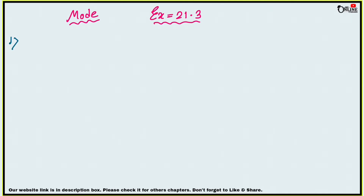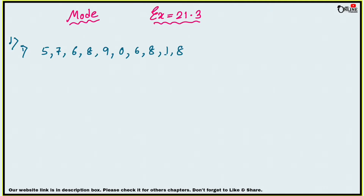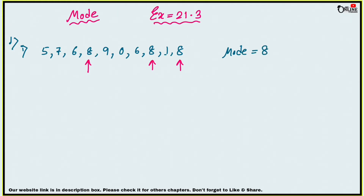The first set is: 7, 5, 7, 6, 8, 5, 7, 6, 8, 9, 0, 6, 8, 1, 8. To find the mode, you have to find the number which occurs maximum times. Here you can find easily that 8 occurs three times, so the mode of this set of numbers is 8.